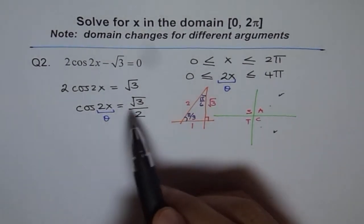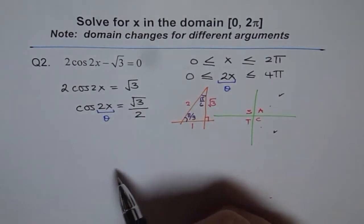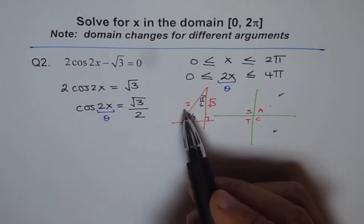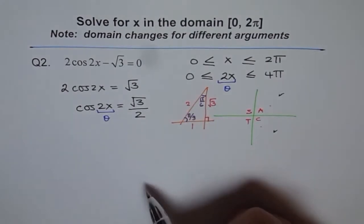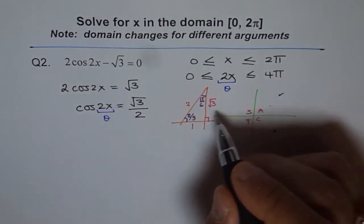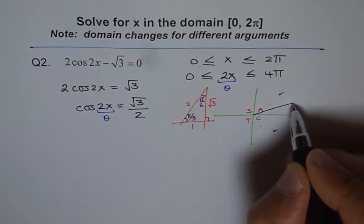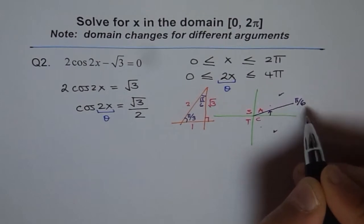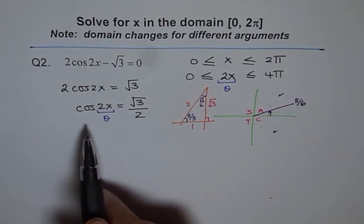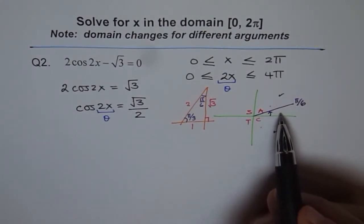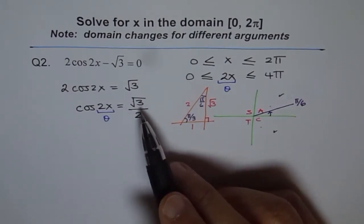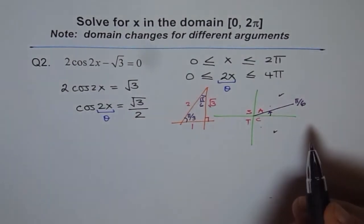Now when is cosine square root 3 over 2? Square root 3 over 2 adjacent over hypotenuse, it is π by 6. That means we have one answer, which is π by 6 here. So at this time, the related acute angle alpha is π by 6 for cos of alpha to be square root 3 over 2.